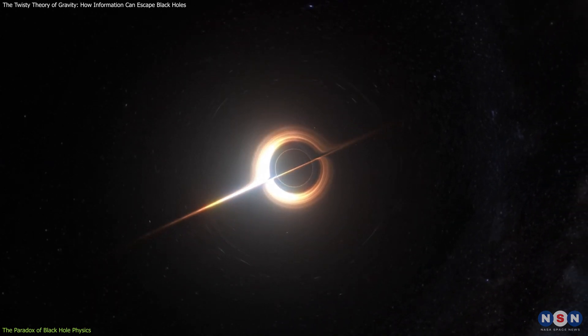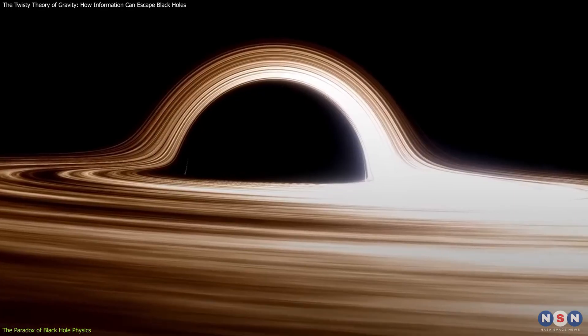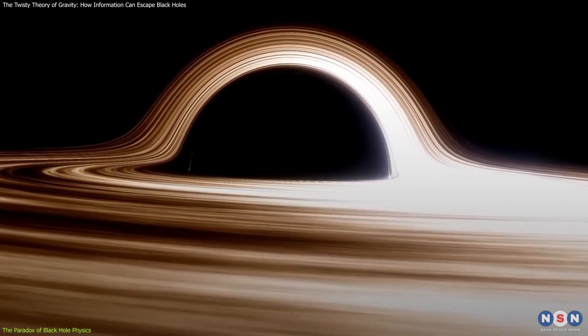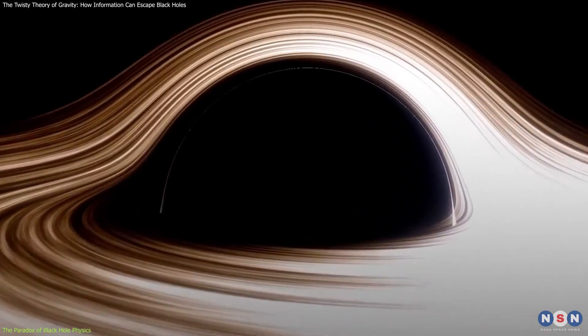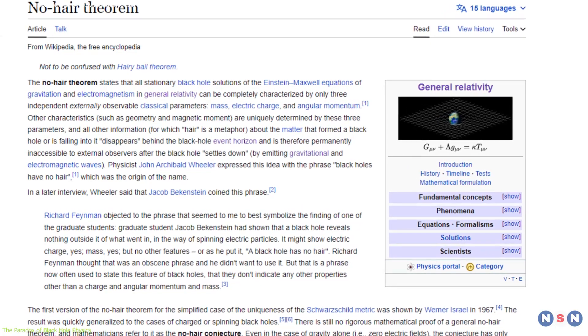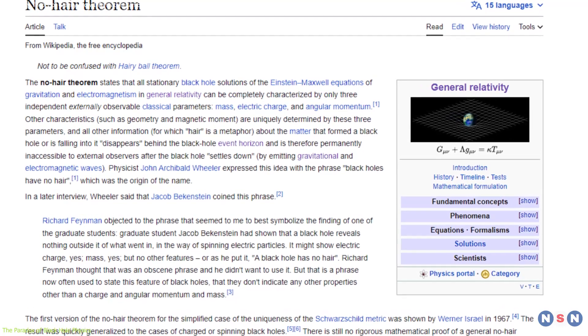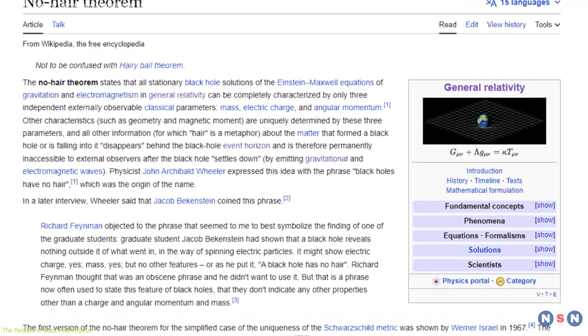its mass, its charge, and its spin. All other details about the matter or energy that formed or entered the black hole are lost forever. This idea is known as the no-hair theorem, and it implies that black holes are very simple objects that have no structure or features.